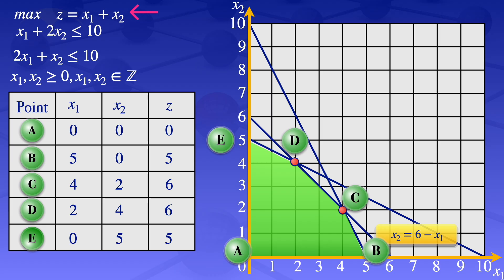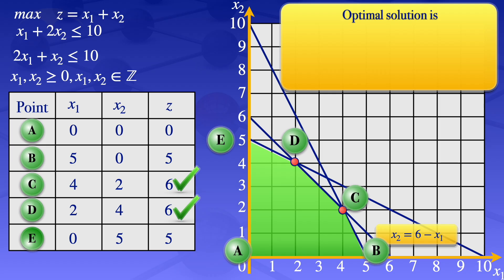Since this is a maximization problem, we look for the largest value of z. The largest value is 6, and we have a tie at points C and D. An integer programming problem can have multiple optimal solutions, so the optimal solution is z equals 6, which occurs when x1 equals 4 and x2 equals 2, or when x1 equals 2 and x2 equals 4. These are the multiple optimal solutions for this integer programming problem.